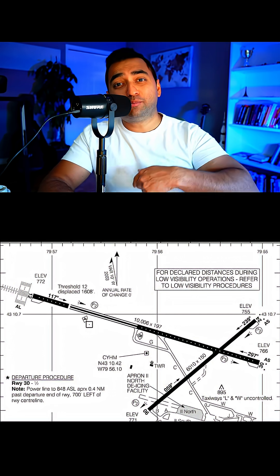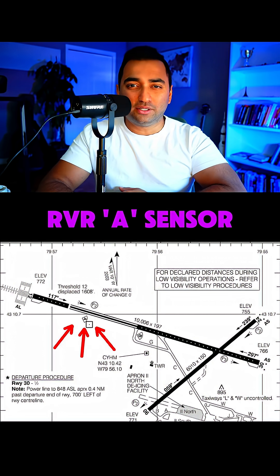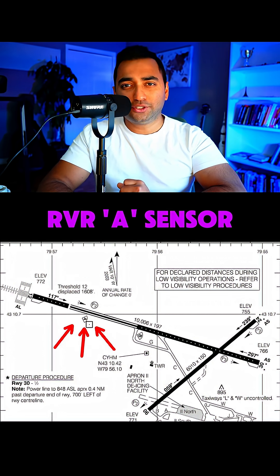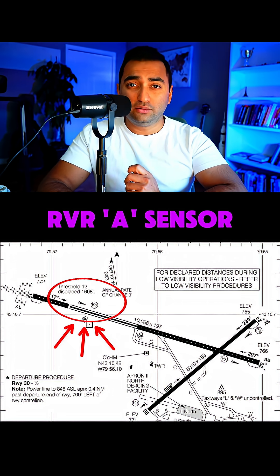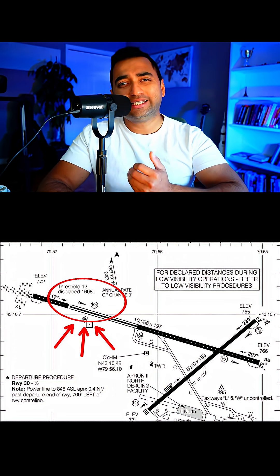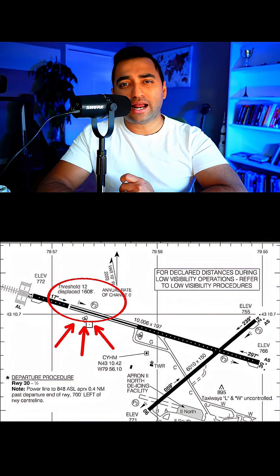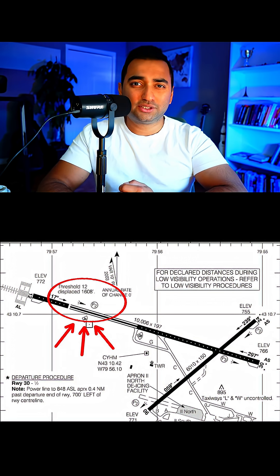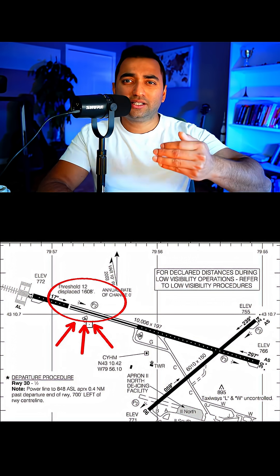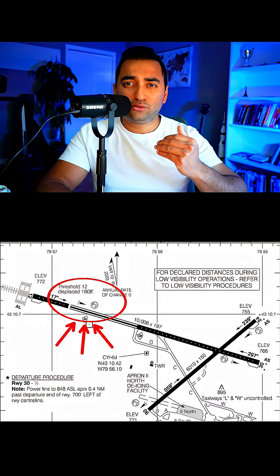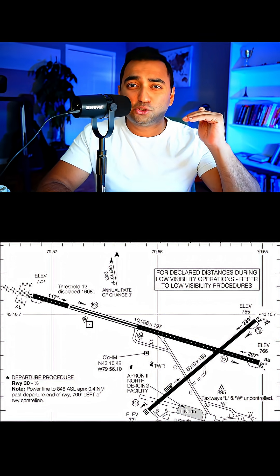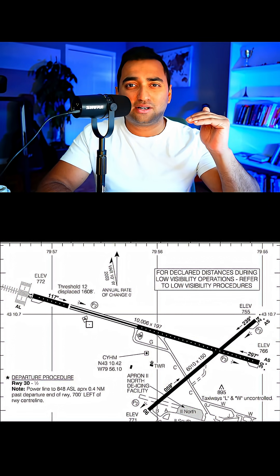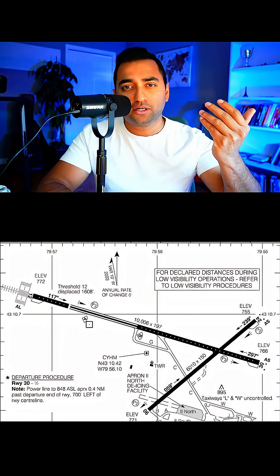Now let's look at a practical example. Let's say you were to depart Hamilton Airport off runway 12. You can see that they have an RVR alpha sensor, which is the sensor right at the threshold of the runway. As long as that RVR shows 2,600 feet or above, you may depart.